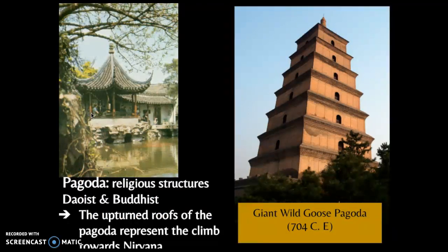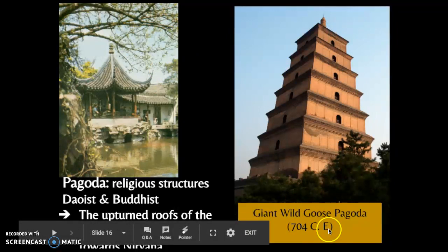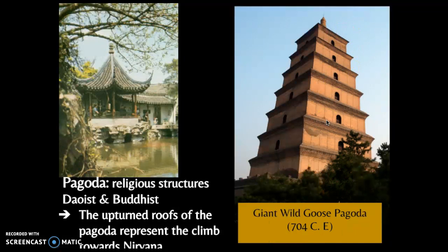The last piece of architecture we'll look at is pagodas. These become religious structures for both Taoism and Buddhism, and you can see they often have a little curve — representing the climb towards nirvana. This is a bit past the Han dynasty, but here is one of the oldest examples of pagodas in China: the Giant Wild Goose Pagoda. A lot of these structures are gone, as China had a rough beginning to the 20th century.